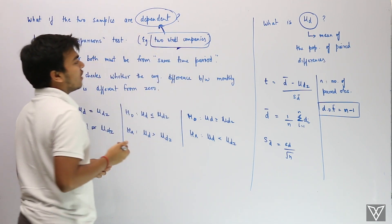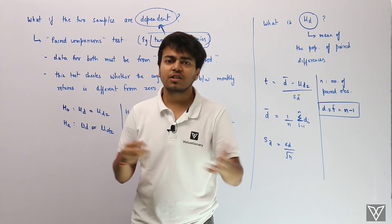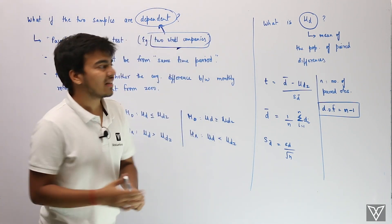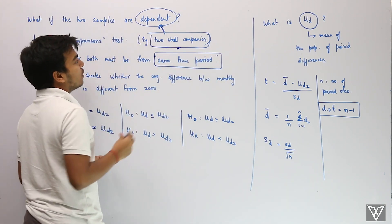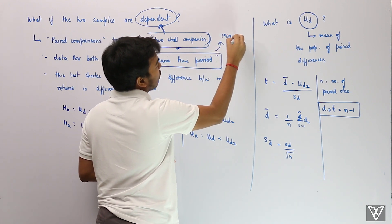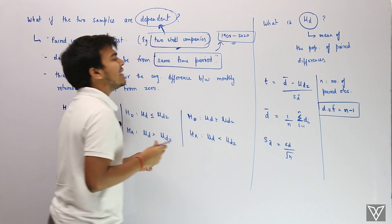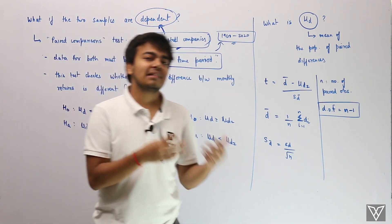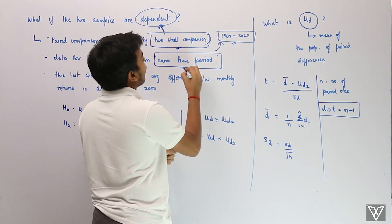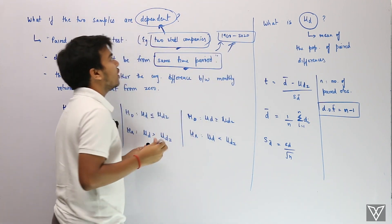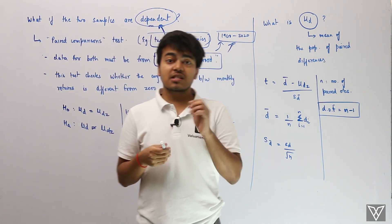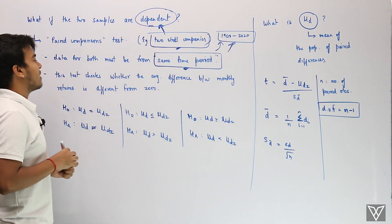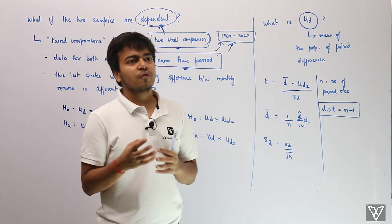Two companies from the same industry can work this way. One important thing to be cautious about is that the data set should be from the same time period for both companies. So if you are using data from 1960 to 2020 for the first steel company, the second company's data should also be from 1960 to 2020. This is a mandatory requirement for dependent series — the time periods must be exactly equal for both.